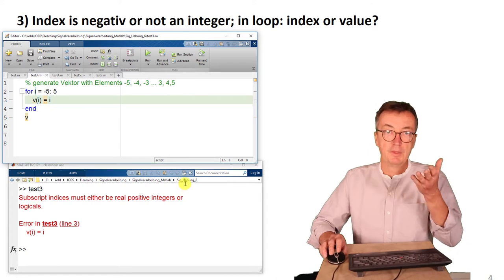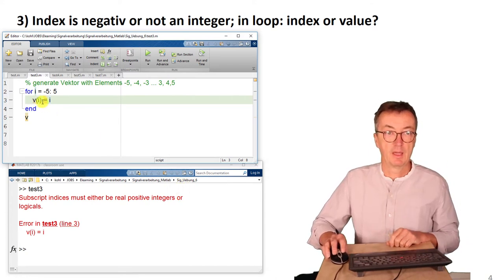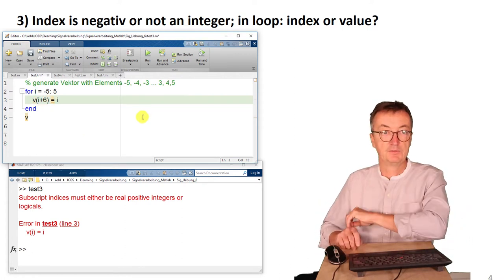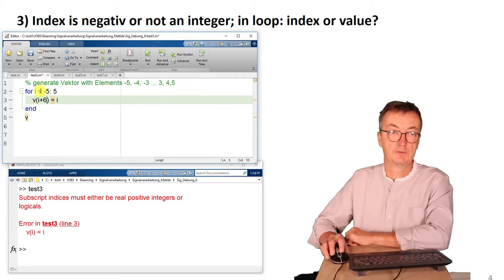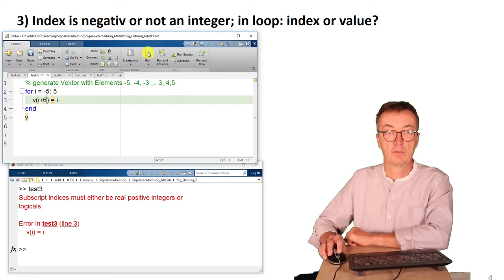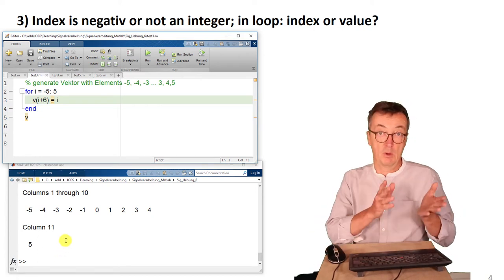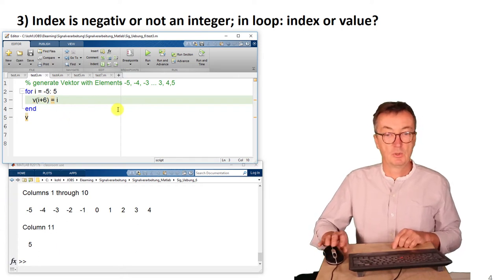You could, in this case, meant that in two different ways. One would be to, for instance, add 6 here. In this case, the first value is the minus 5 plus 6 is 1. So that would work and give this vector v. In my opinion, although it's running, that's a bit confusing.